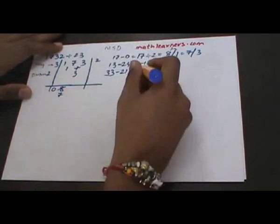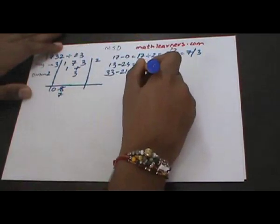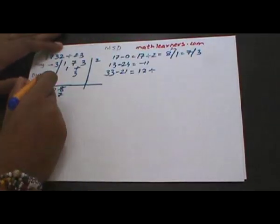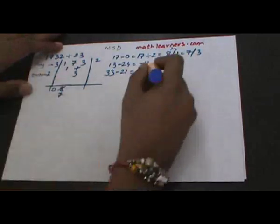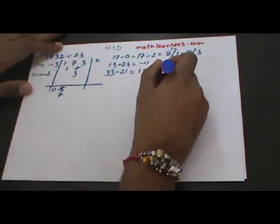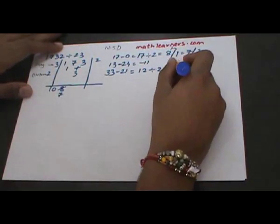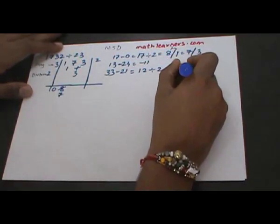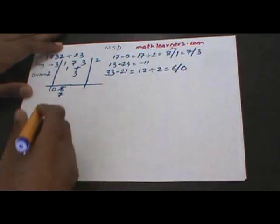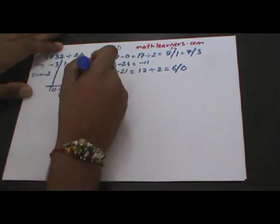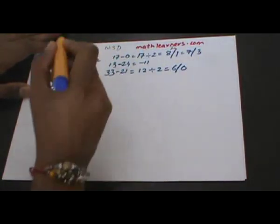This 12 will be divided by our divisor 2, so the quotient is obtained as 6 and the remainder as 0.